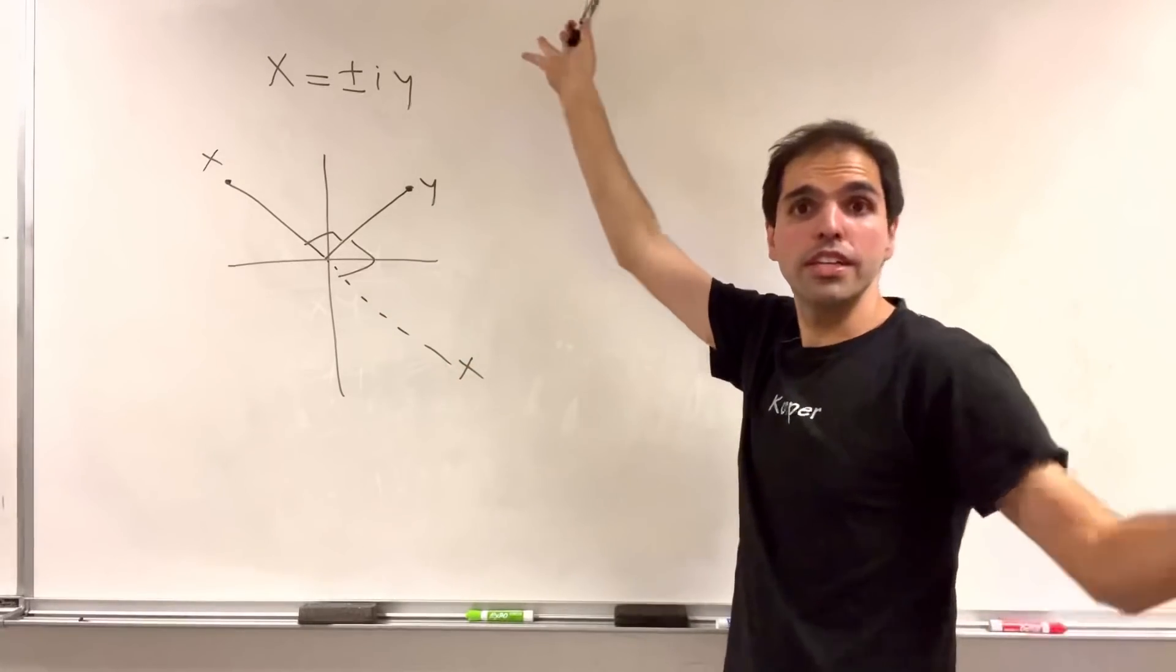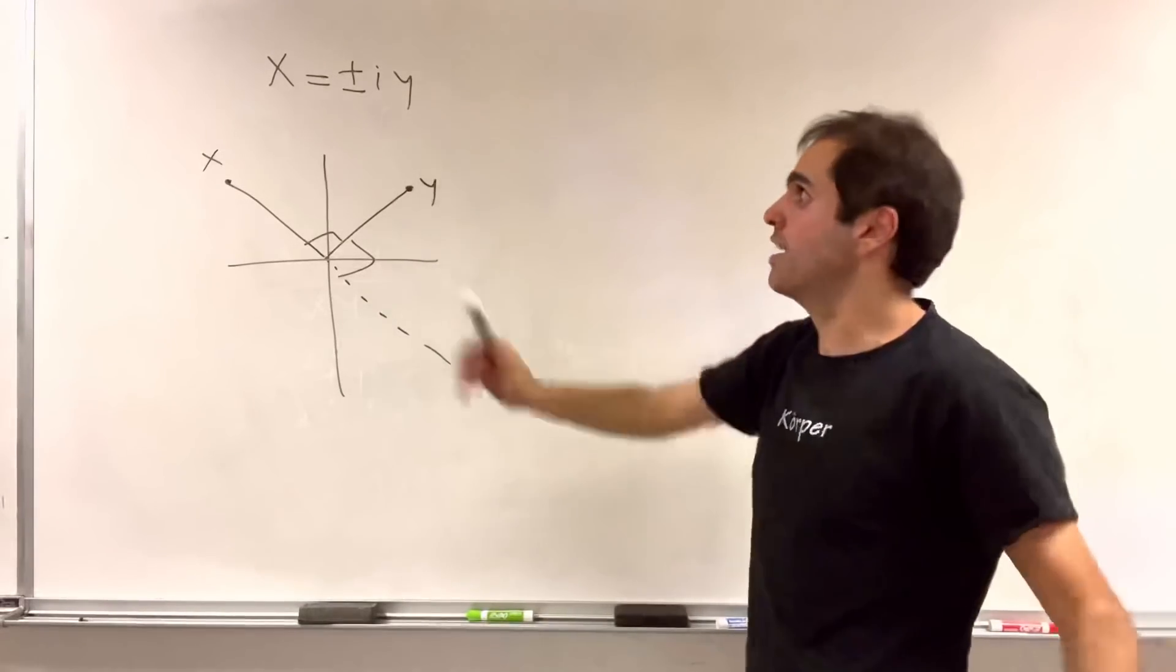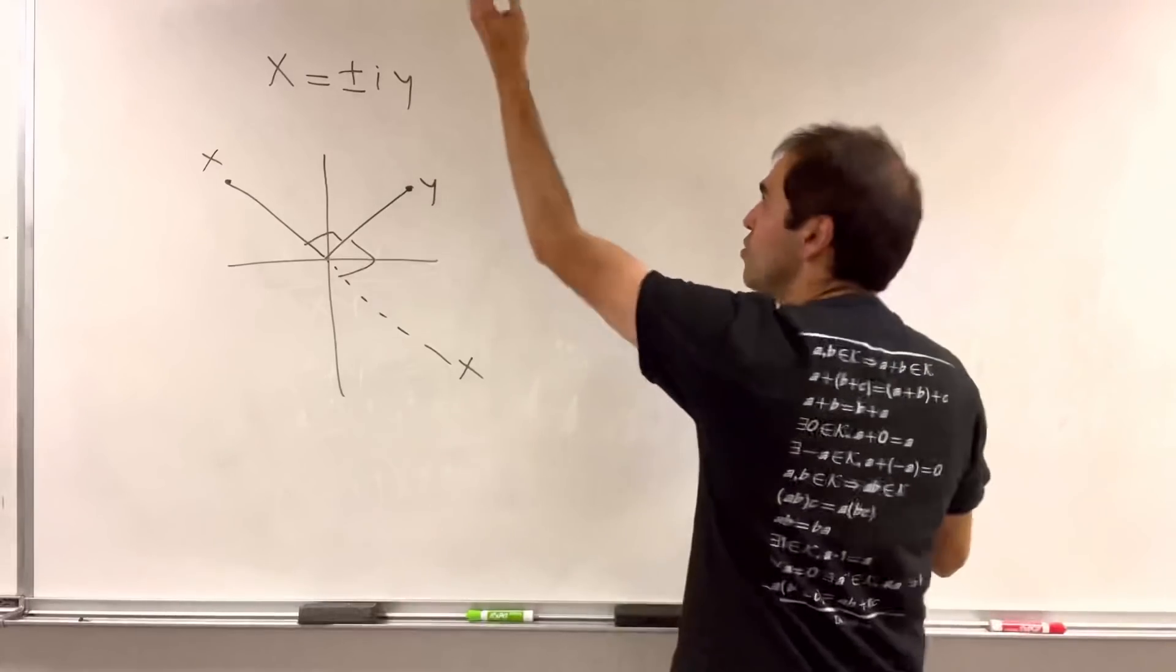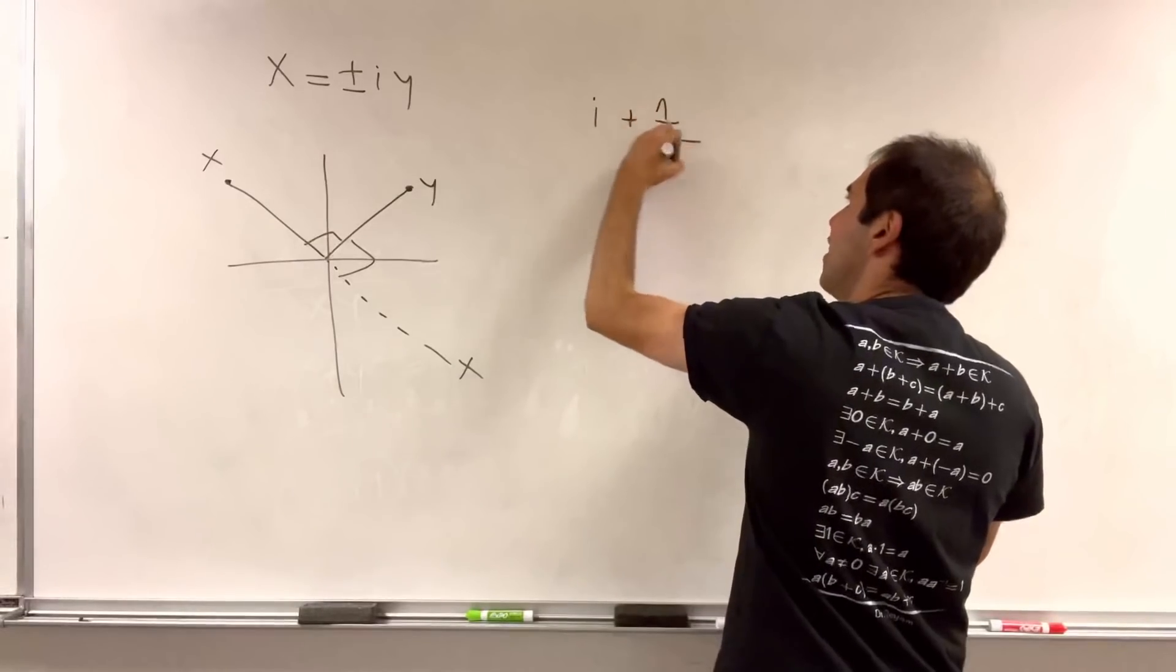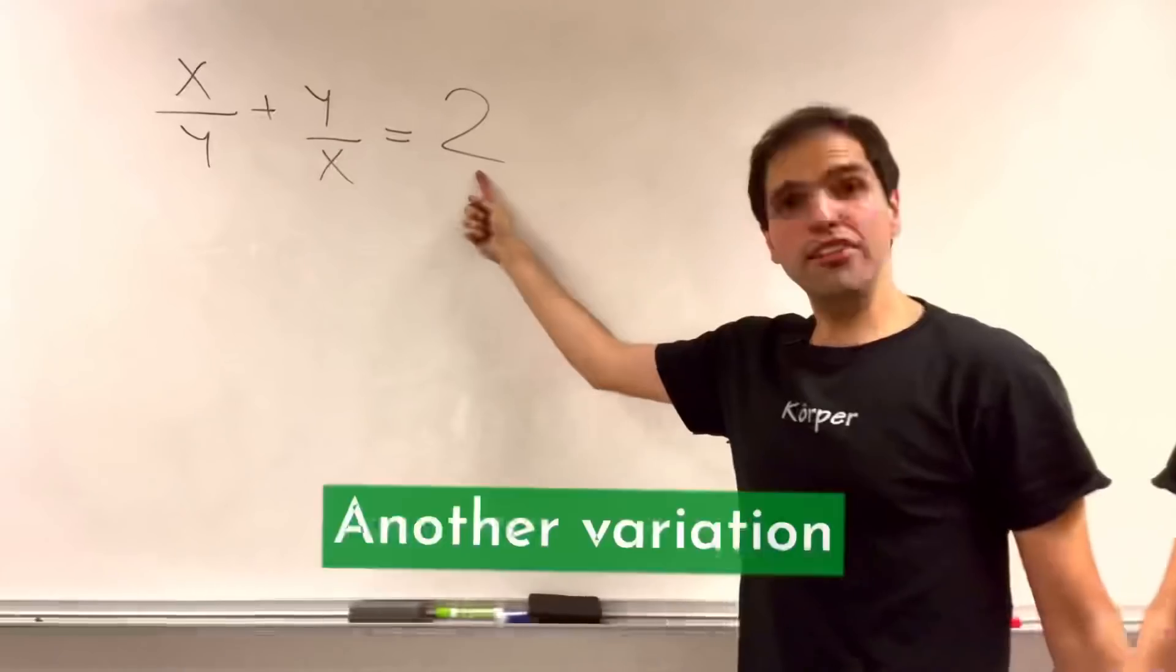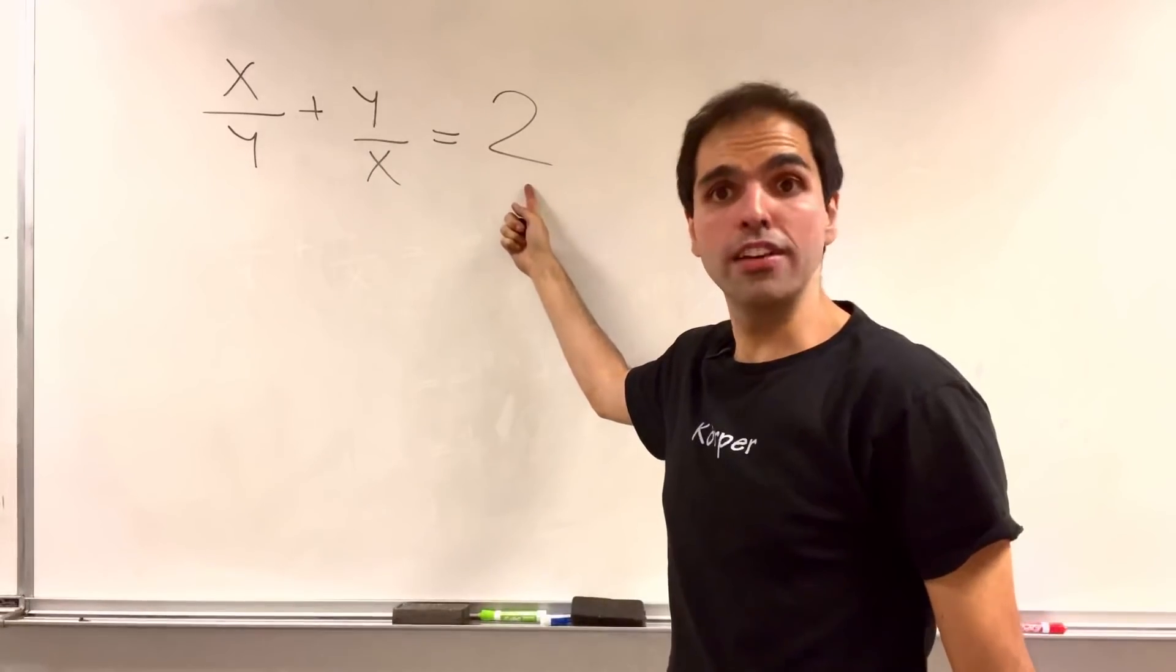And essentially, it just boils down to the fact that, in this case, x over y is i, and then y over x is 1 over i, that this equals 0. If you replace this 1 with a 2, it becomes much easier.